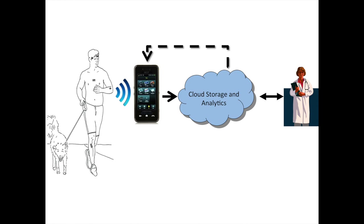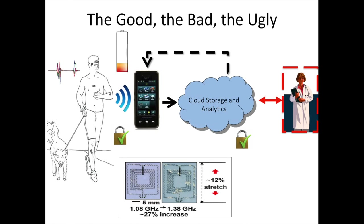I'd be lying if I said everything worked beautifully — there are challenges. One involves doing validation studies and verifying that new sensors provide commensurate information with conventional technology. Another big challenge is energy: although electronic circuits get smaller, energy density has not kept pace, so we build very energy-aware applications. An unintended consequence of being bio-integrated: if you want something flexible that accommodates mechanical deformations, the resonant frequency of your antenna can change — stretching by just 12% changes the resonant frequency by 27%, which can conflict with FCC requirements. There are also issues related to security, privacy, and presenting statistical results to doctors.